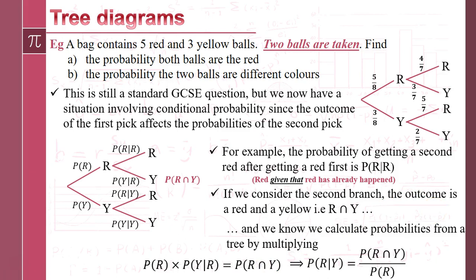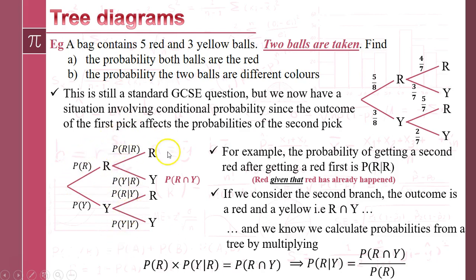It's worth noting that if these events weren't conditional — if we had replacement — then P(Y|R) would just be P(Y), so we'd get P(R) × P(Y) = P(R ∩ Y). The same thing still works for independent events. The key point is that on a probability tree it's the second branches that become the 'given' parts, and the tree diagram naturally spits out the conditional probability formula.